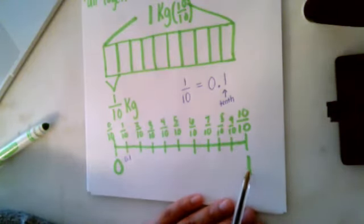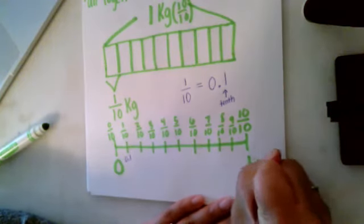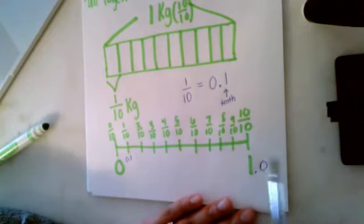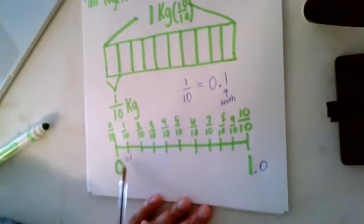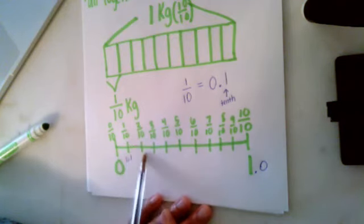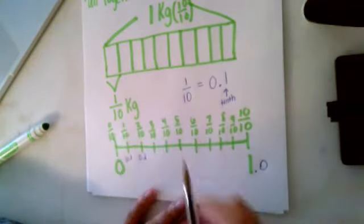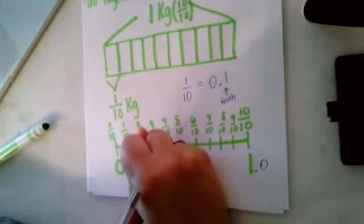1 is a whole number. If there was a decimal, it would be 0.0, but since there's a 0, we usually just drop it. So we have 0, 0.1. What would two-tenths be? Hopefully you said 0.2. What would three-tenths be? Hopefully you said 0.3.